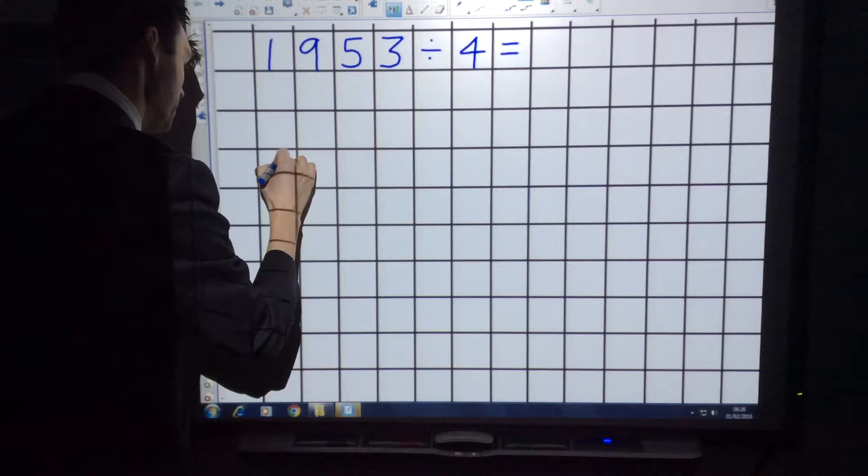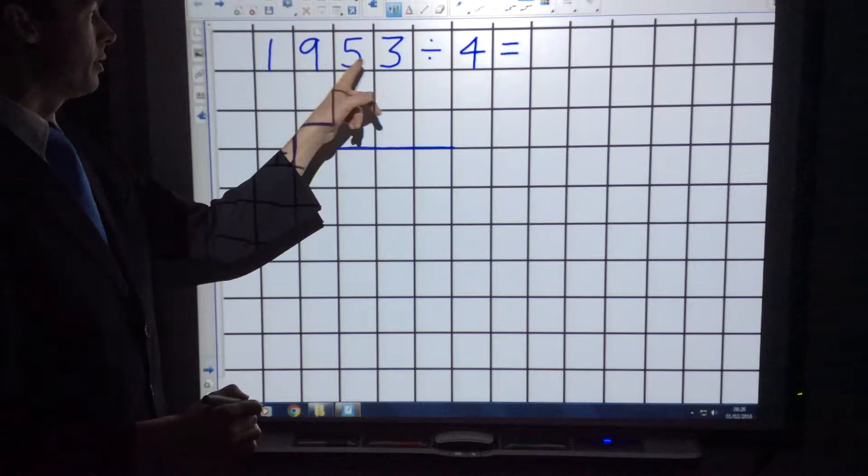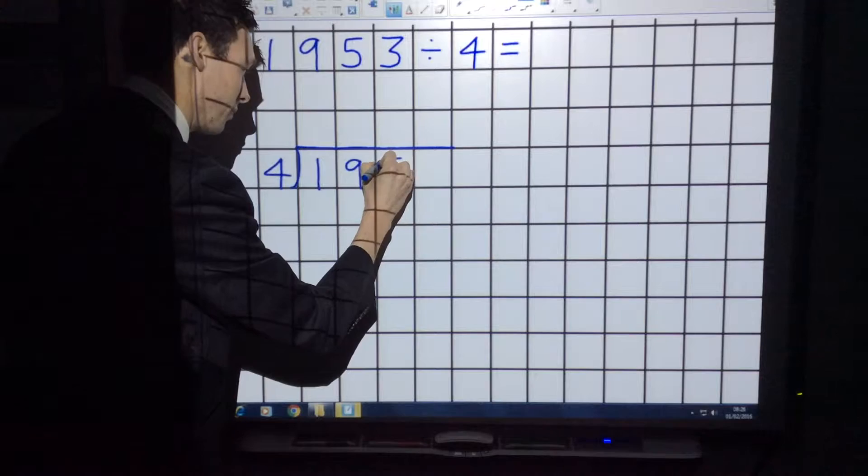You start by writing the number you're dividing by, which is called the divisor. Then you draw this symbol, and you write the starting number inside, which is called the dividend.